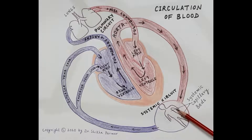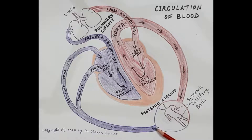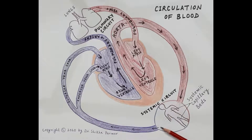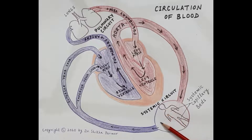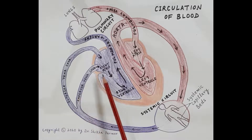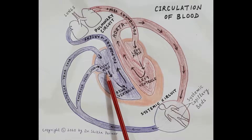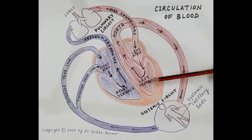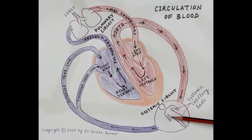Oxygen is consumed by the body cells and the blood gets deoxygenated. This deoxygenated blood is carried from the lower part of the body by the inferior vena cava and from the upper part of the body by the superior vena cava, both returning deoxygenated blood to the right atria. This circulation of oxygenated blood from the heart to the body and deoxygenated blood from the body back to the heart is termed systemic circulation.